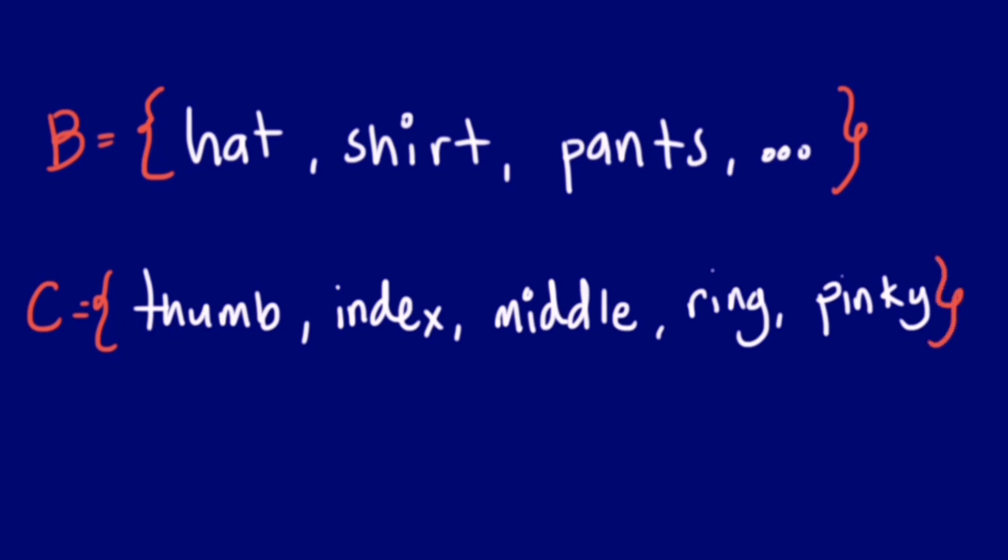Notice the notation of our two sets. The first set has an infinite number of elements because we cannot list all the things that we wear. Now we can call this an infinite set.